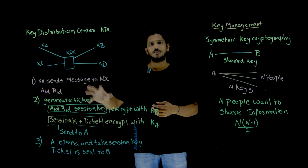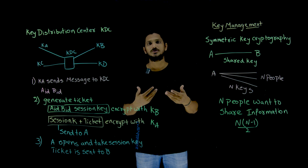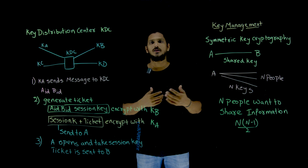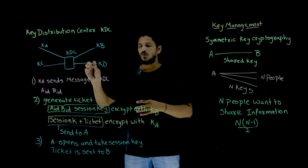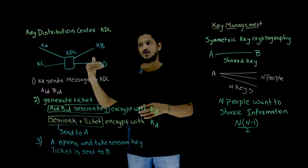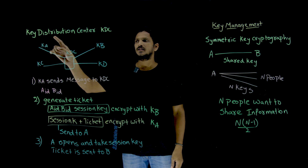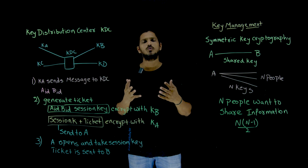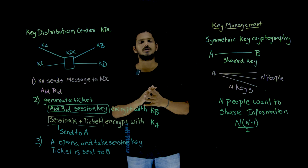This is the old method. In our next classes we are going to discuss new methods for how the key is to be shared between A and B without anyone else knowing. Now, to manage the keys, in the old days they maintained a Key Distribution Center. Anyone who wants to exchange information has to be registered with this Key Distribution Center.